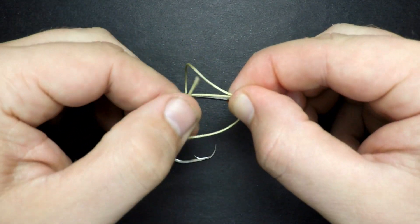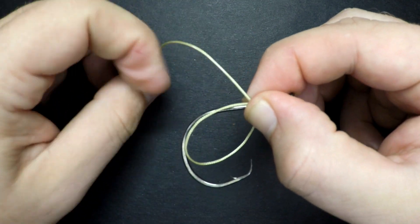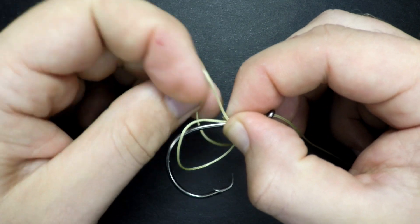Begin threading your tag end through the loop and wrapping it around the shank. Now this knot will work with all types of fishing line. For this video, I'm using really thick braid so I'm going to make about 8 to 10 wraps.